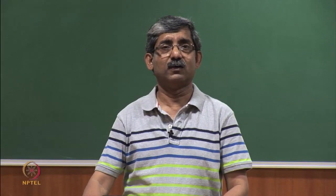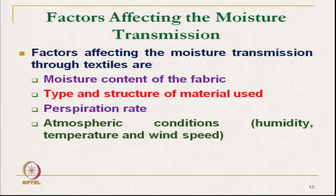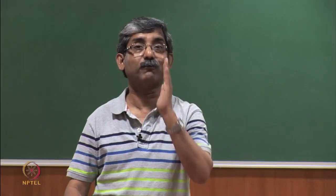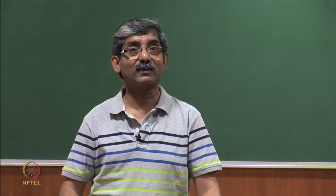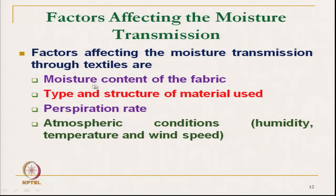Now let us try to see what are the factors which affect moisture transmission through clothing. We know the amount of sweat we generate, and that amount of sweat we have to manage through the clothing in liquid form. We must know what are the factors. The first factor is the moisture content of the clothing — if the moisture content is already very high in the clothing, it will affect the moisture transmission.